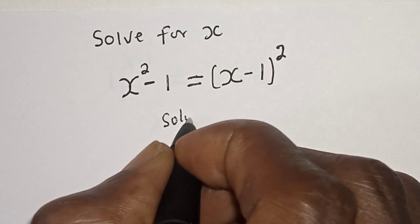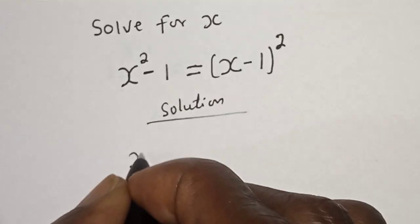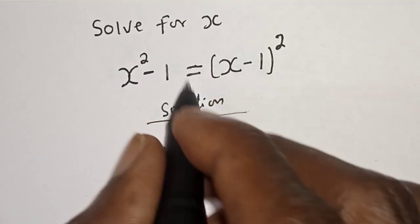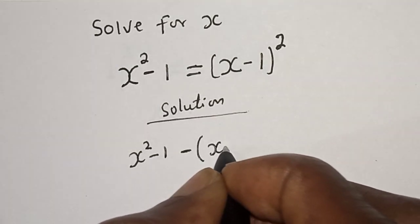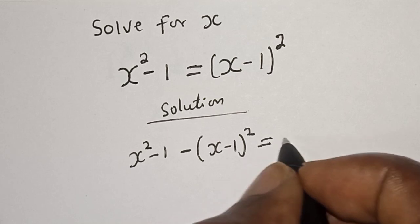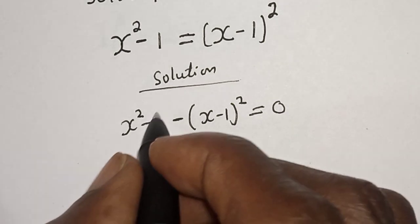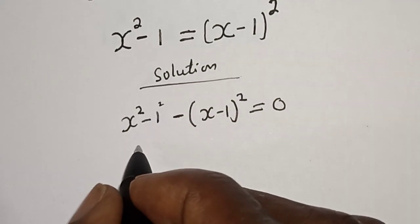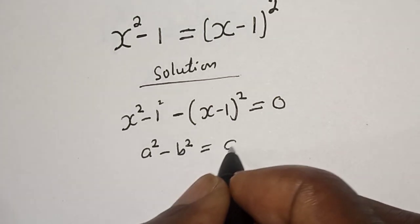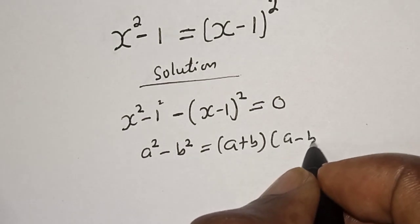Solution. We have s squared minus 1, and let's bring this to this side: minus (s minus 1) squared is equal to 0. Then s squared minus 1 — this is also 1 squared — and we apply the identity: a squared minus b squared equals (a plus b)(a minus b).